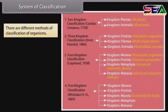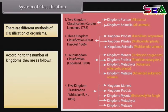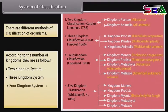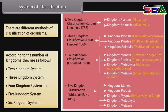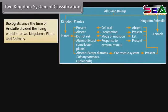System of Classification. There are different methods of classification of organisms. According to the number of kingdoms, they are as follows: 2 Kingdom System, 3 Kingdom System, 4 Kingdom System, 5 Kingdom System, and 6 Kingdom System. Biologists since the time of Aristotle divided the living world into two kingdoms: Plants and Animals.